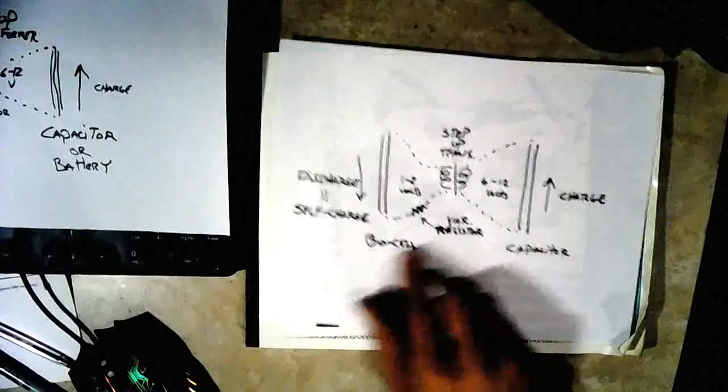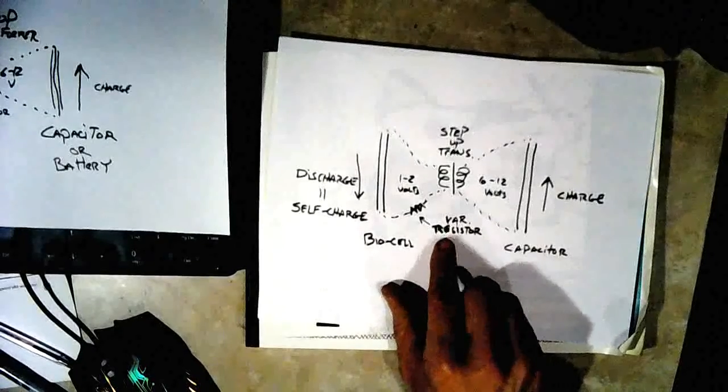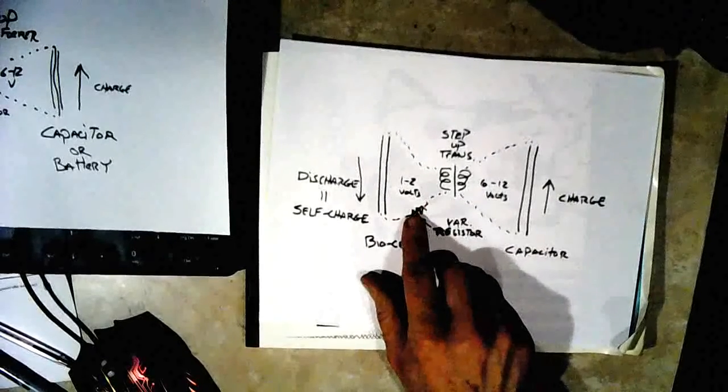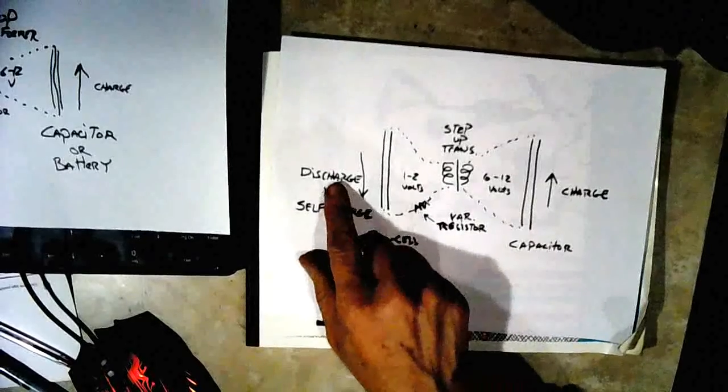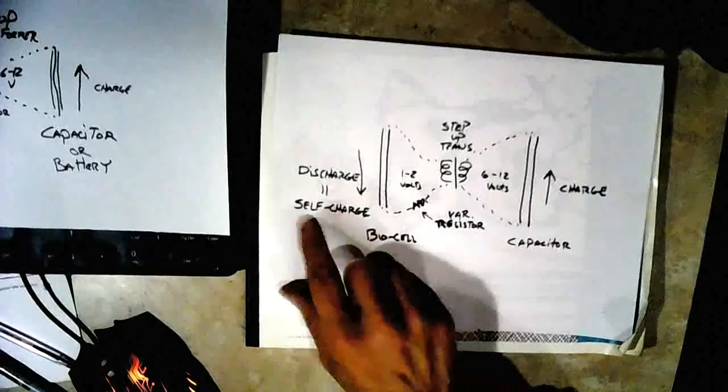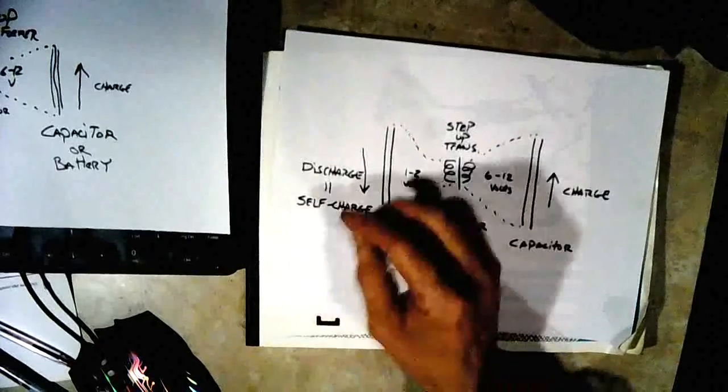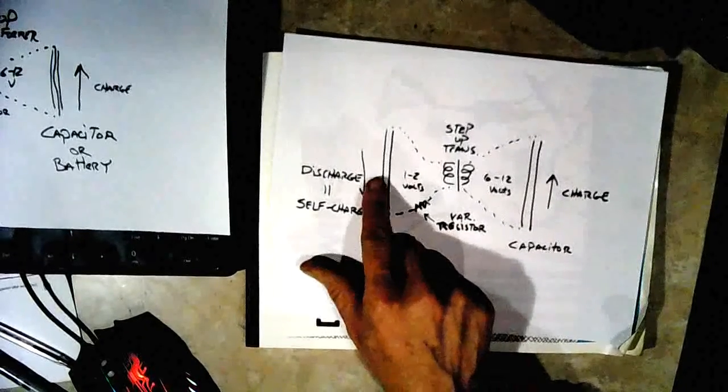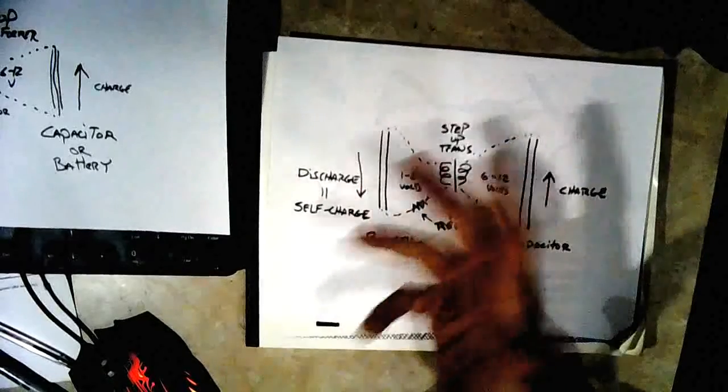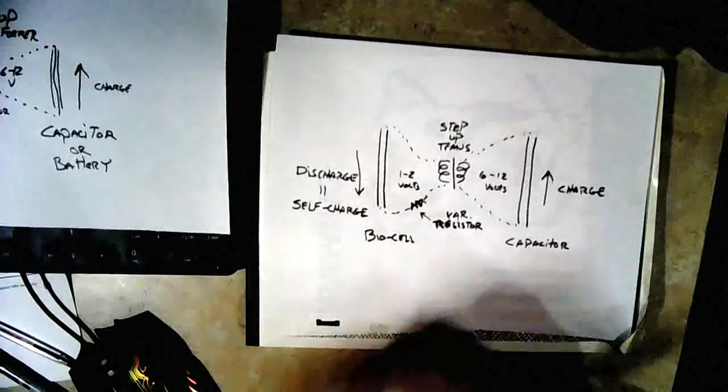If you took a variable resistor and put it in the line over here, you could balance the discharge of the biocell with the self-charge of the biocell. You could just keep it at one point where it's balanced and let it produce power continuously.